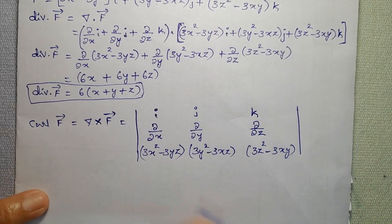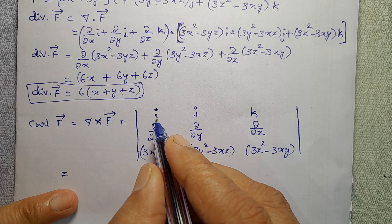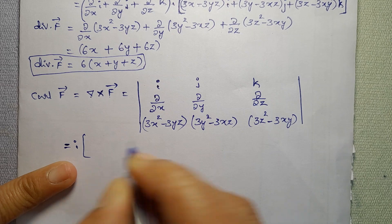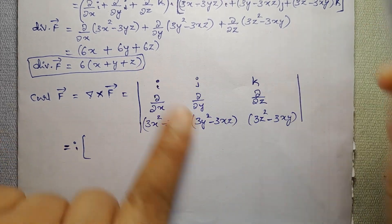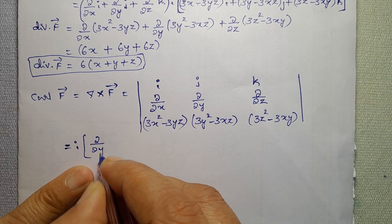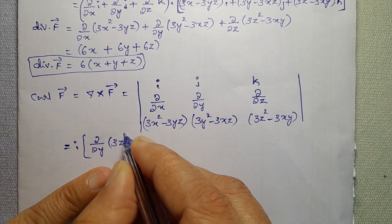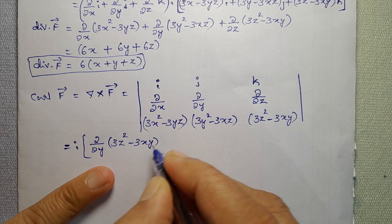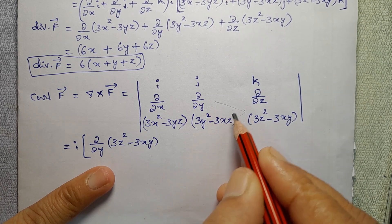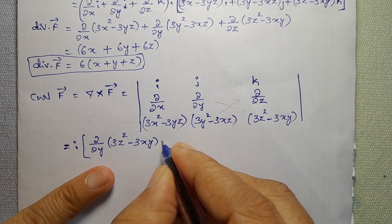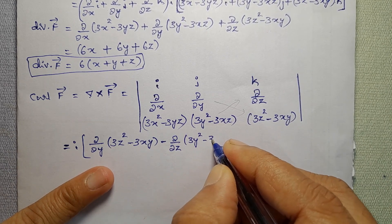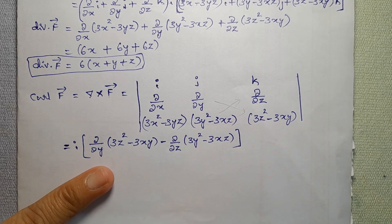Expanding the determinant: the i component is [d/dy(3z² − 3xy) − d/dz(3y² − 3xz)]. Partial derivative of (3z² − 3xy) with respect to y is −3x. Partial derivative of (3y² − 3xz) with respect to z is −3x. So i component: −3x − (−3x) = 0.